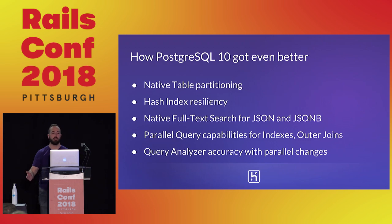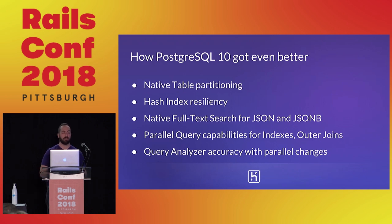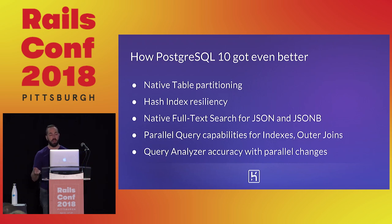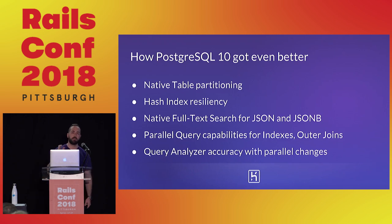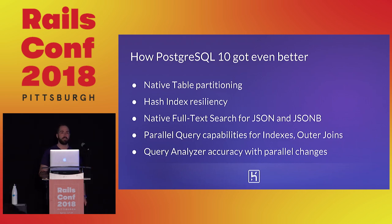Postgres 10 got even better as a performant database. Some of the things we're going to talk about today are native table partitioning, hash index resiliency, full text index searching on JSON and JSON blobs that is native now, parallel queries and how they affect large joins, indexes, and other portions of the code base, and query analyzer accuracy and changes to how the query planner does efficient work.